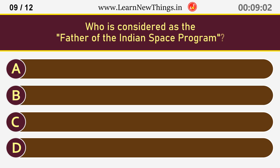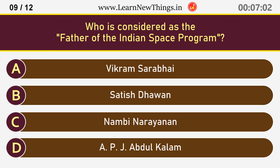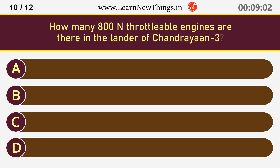Who is considered as the father of the Indian space program? How many 800N throttleable engines are there in the lander of Chandrayaan-3? 4.